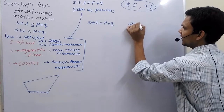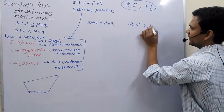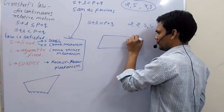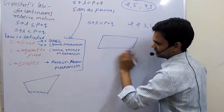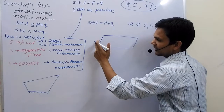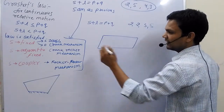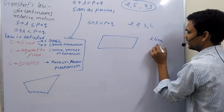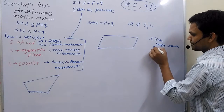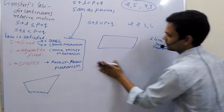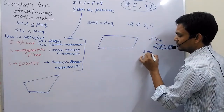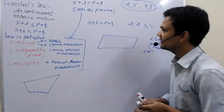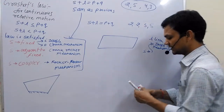If we take a pair of links of equal length and the law is also satisfied, suppose I take links of equal length. If I fix the largest link, the cranks at adjacent positions are both of equal length and will rotate 360 degrees. Fixing the largest link gives a double crank mechanism. If I fix any link in this chain, we obtain a double crank mechanism. This chain is called a golden chain.